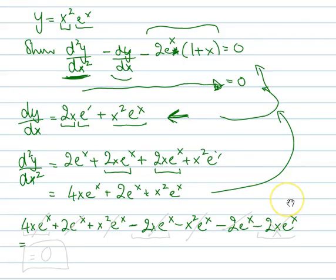OK, and what does that all equal? So we've got 4x e to the x here, we've got minus 2 and minus 2, so those cancel out. We've got 2 e to the x here, and that cancels out with that 2 e to the x, and x squared e to the x cancels out with minus x squared e to the x, and we end up with 0. Therefore, we've better answered.